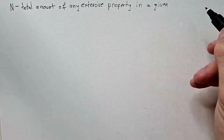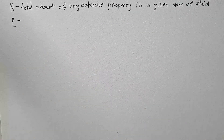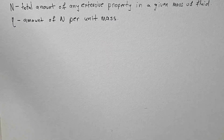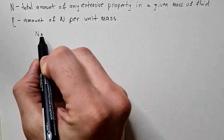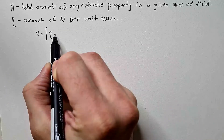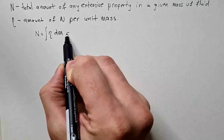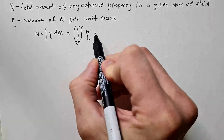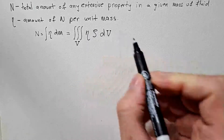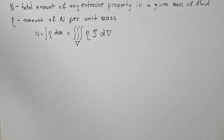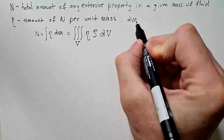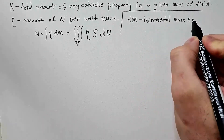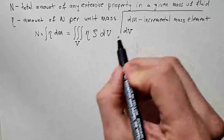Let N be the total amount of any extensive property in a given mass of fluid. Further, let eta be the amount of N per unit mass. Therefore, we can write that capital N is the integral of eta dm, or equivalently, the volume integral of eta·ρ dV, where capital V is volume. This follows because dm is ρ dV, where dm is an incremental element of mass and dV is an incremental element of volume.